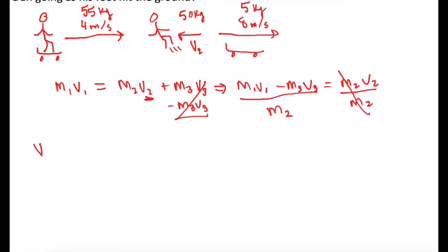So now V2, or the velocity for Dan, is equal to the mass and speed of both of them together minus the mass and speed of the skateboard alone divided by the mass of just Dan. So now let's go ahead and plug everything in.